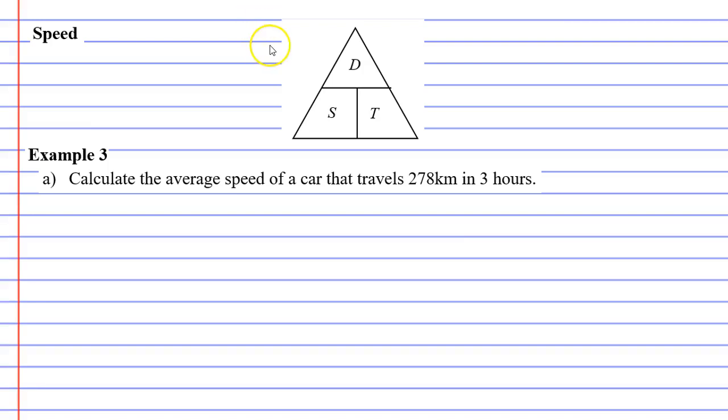First of all we'll talk about the speed formulas. You'll notice we have this little triangle with a D, an S, and a T. Now D stands for distance, S stands for speed,